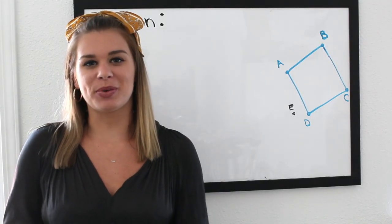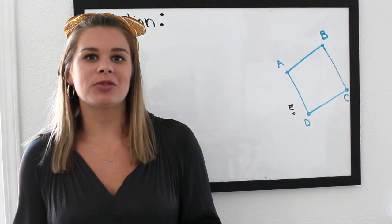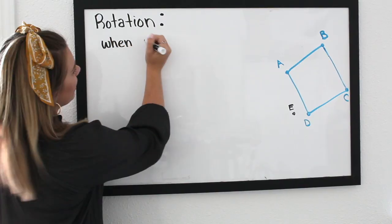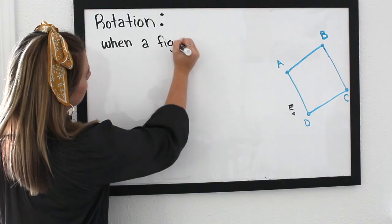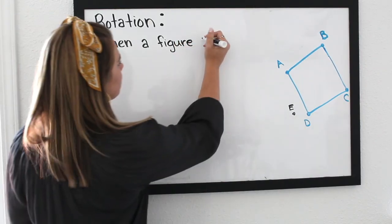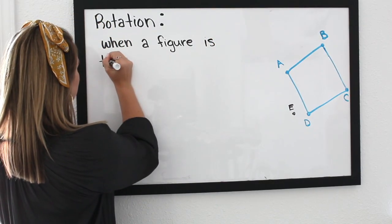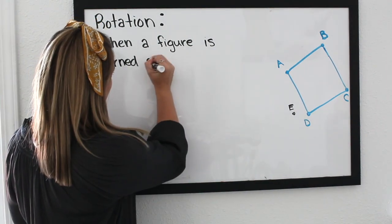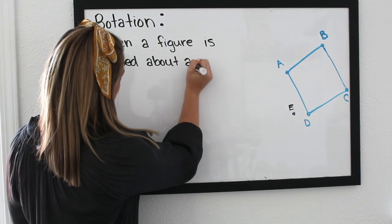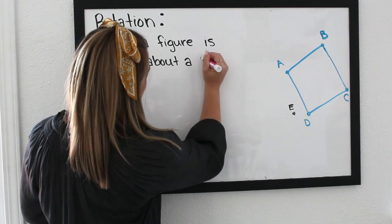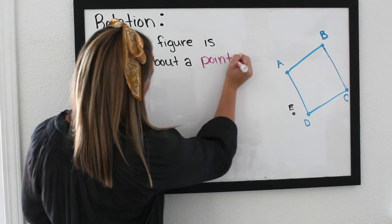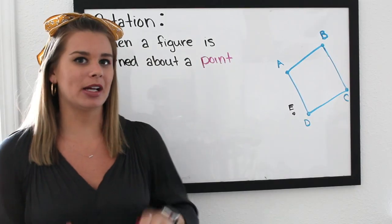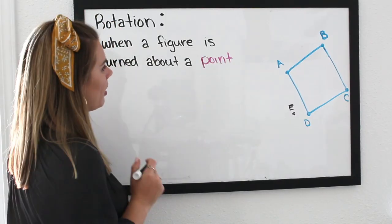So the first rigid transformation we're going to go through is a rotation. A rotation is when a figure is turned about a particular point. I'm going to change colors just to emphasize that. And it can be turned in different directions — it's turned about a point either clockwise or counterclockwise.